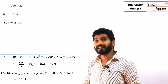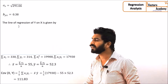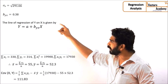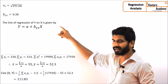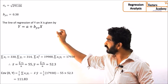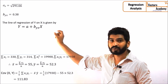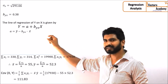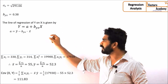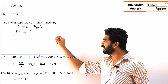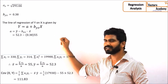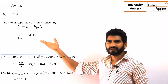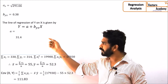The linear regression equation is given by the formula y = a + b × x, where b is the regression coefficient which we have already found out. To find a, the formula is: a = ȳ minus b_yx into x̄. x̄ and ȳ are the means of x and y which we already know, so we substitute and find out a.